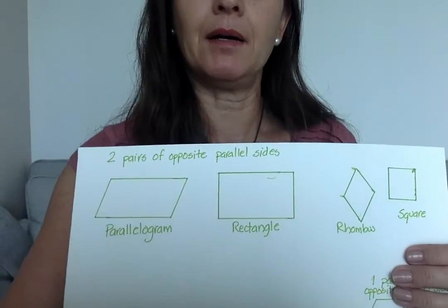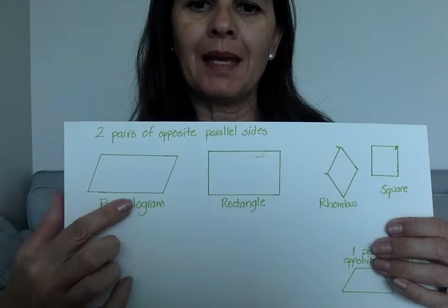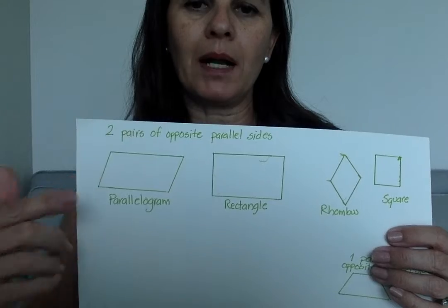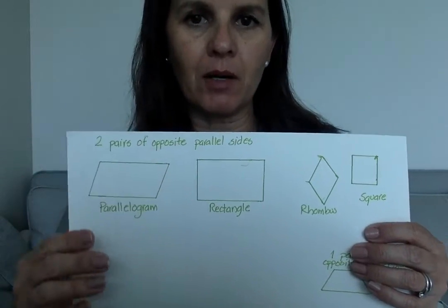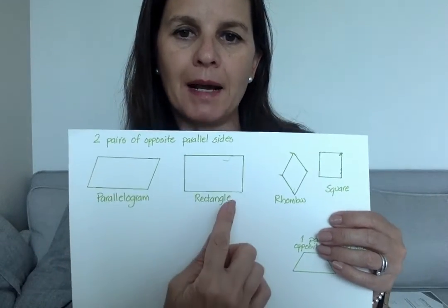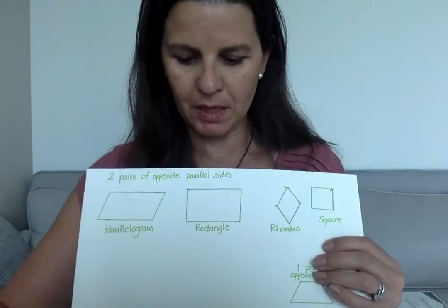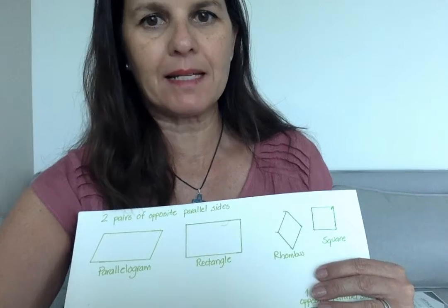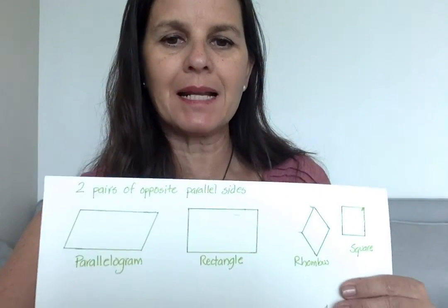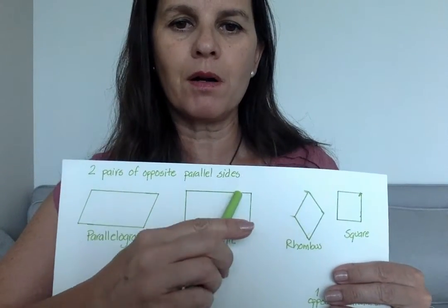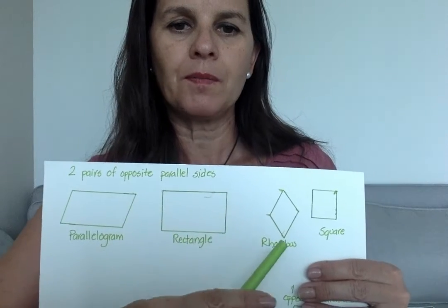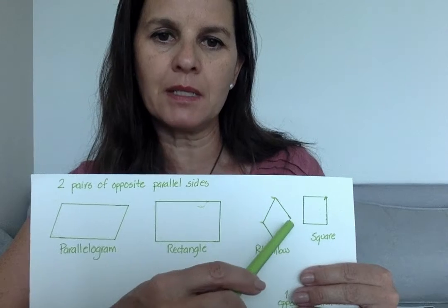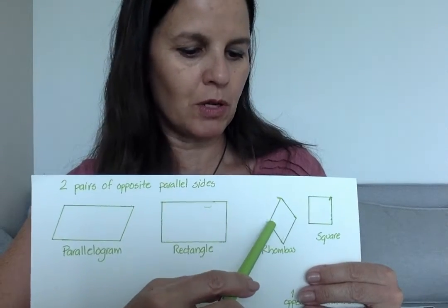So we have a parallelogram. It kind of looks like a rectangle, except that the sides are more like slanted on an angle. And then we have a rectangle, and we call it a rectangle because in Latin, rect means right. So that means that our rectangle has four right angles. Our rhombus, their sides are all the same size, so they're congruent, but their angles are not.